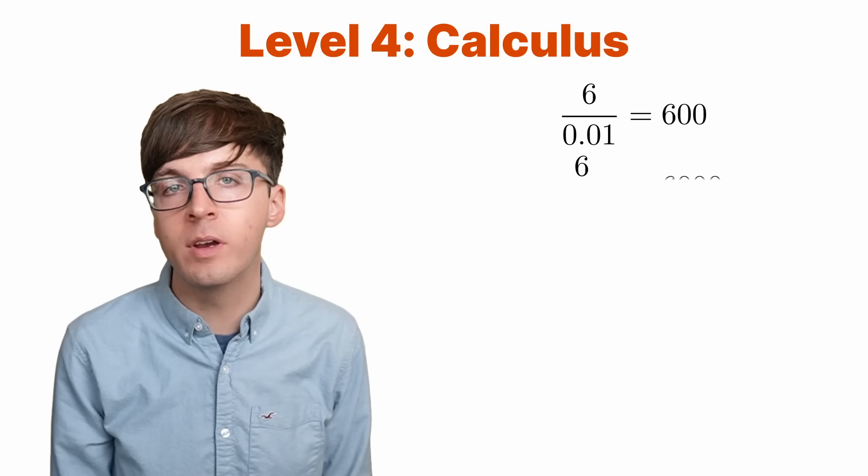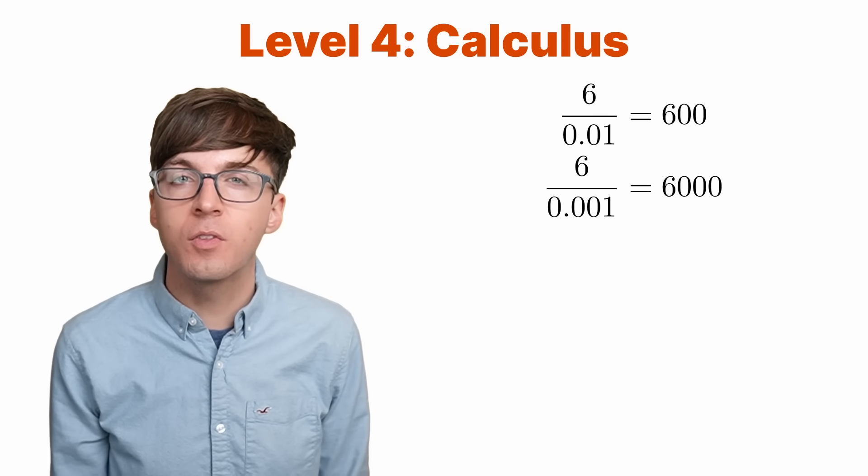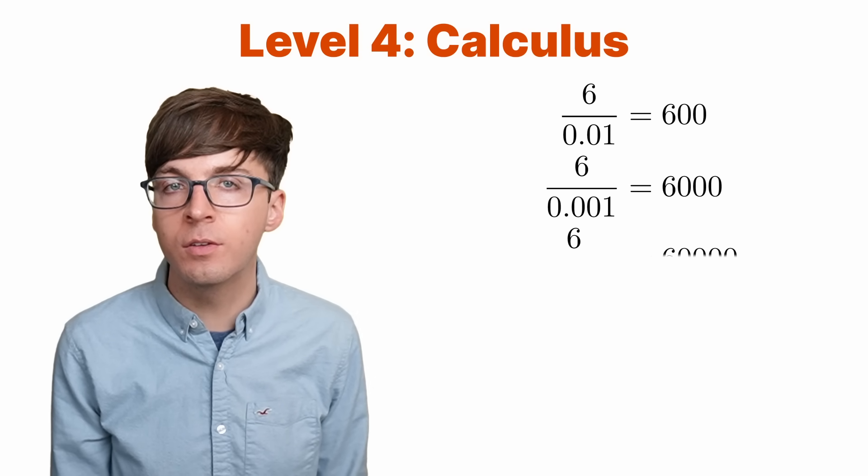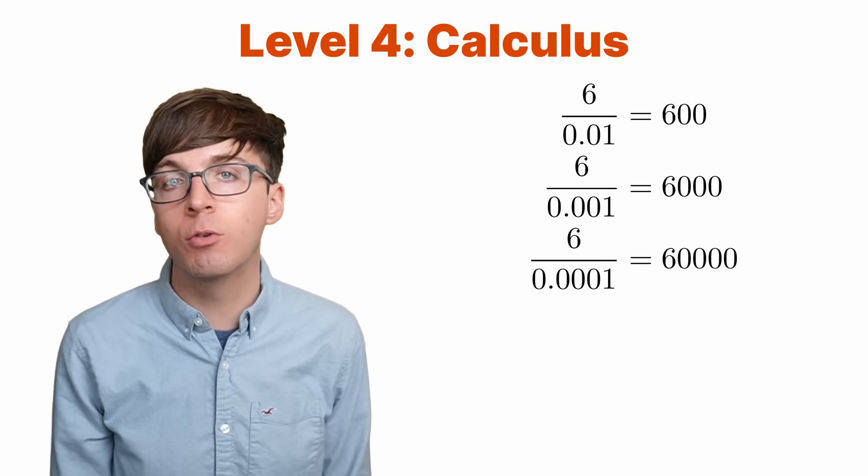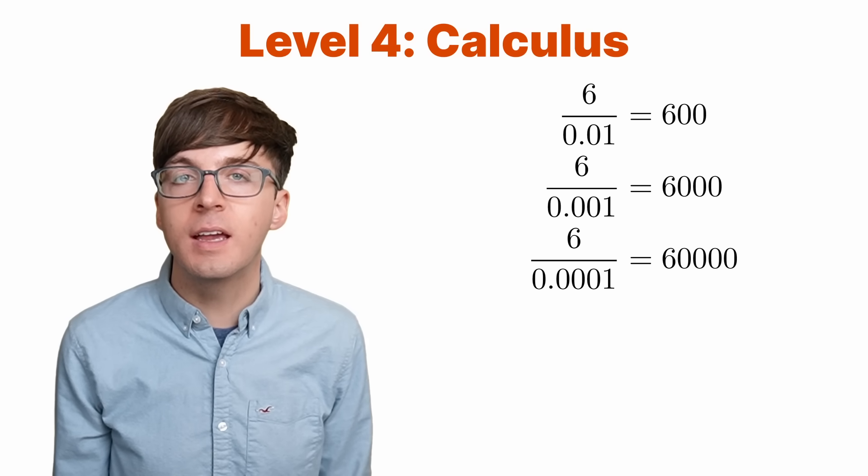We can divide by an even smaller number to get an even better estimate, say six divided by 0.001. This gives us 6000. The smaller we make that denominator, the closer it is to zero, and the bigger the quotient will be. The quotient is approaching infinity.